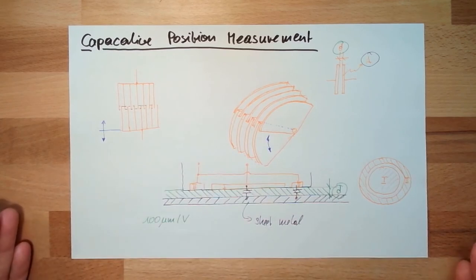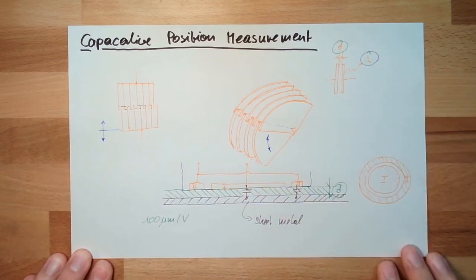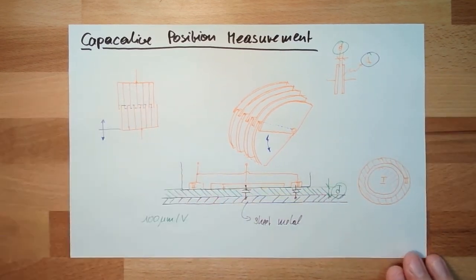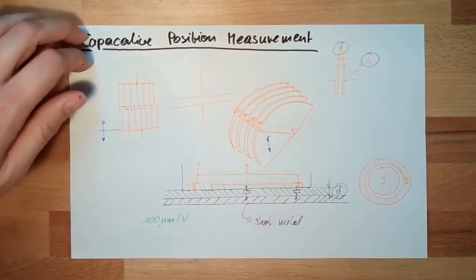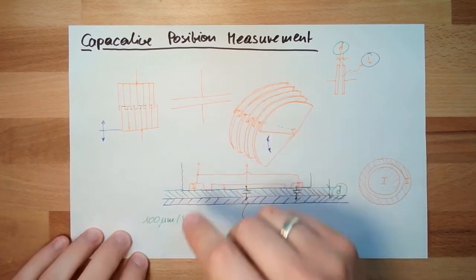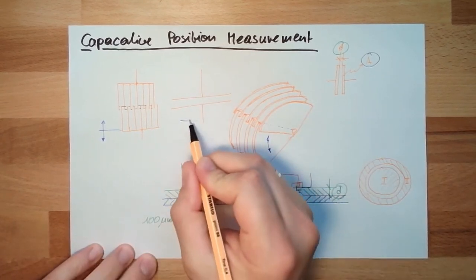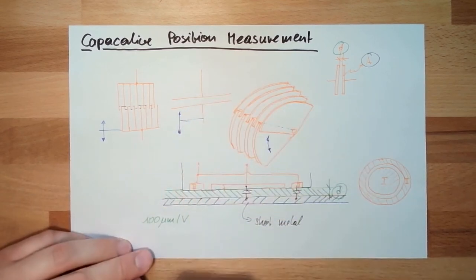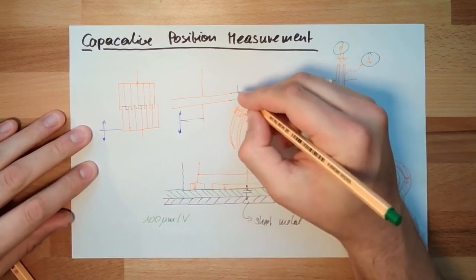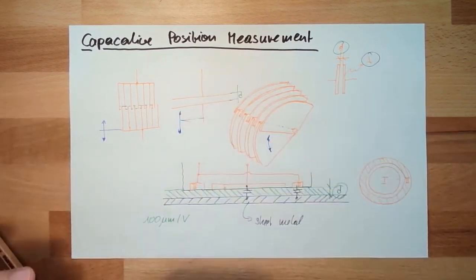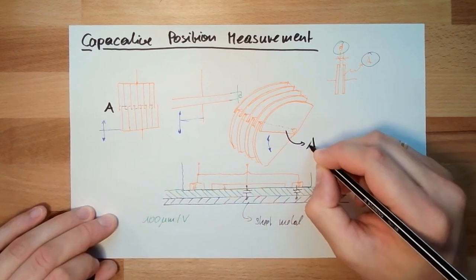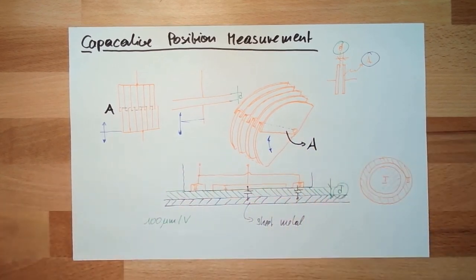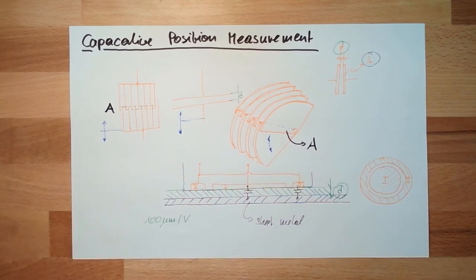So those are the possibilities of capacitive position measurement: either change of the distance or change of the area. You can also think of one plate and a second plate — if you only have small movement, one plate is moving and the distance is changing. If this is fixed, then the area is changing. Those are the principles for this time.